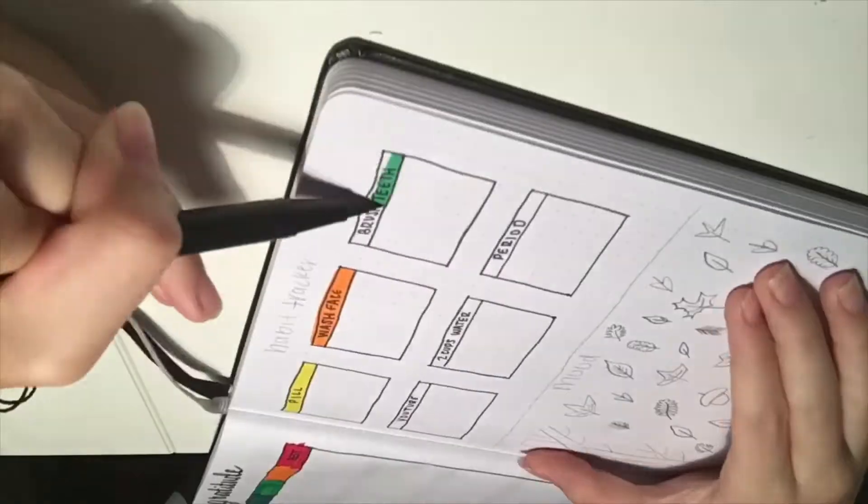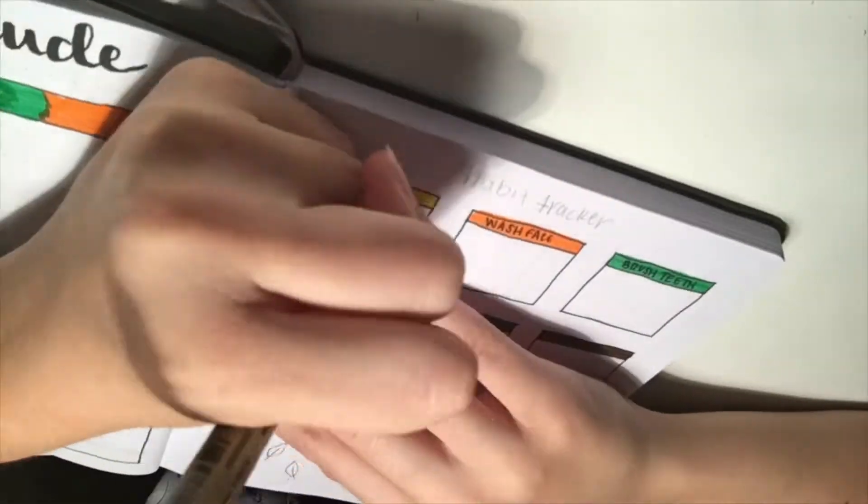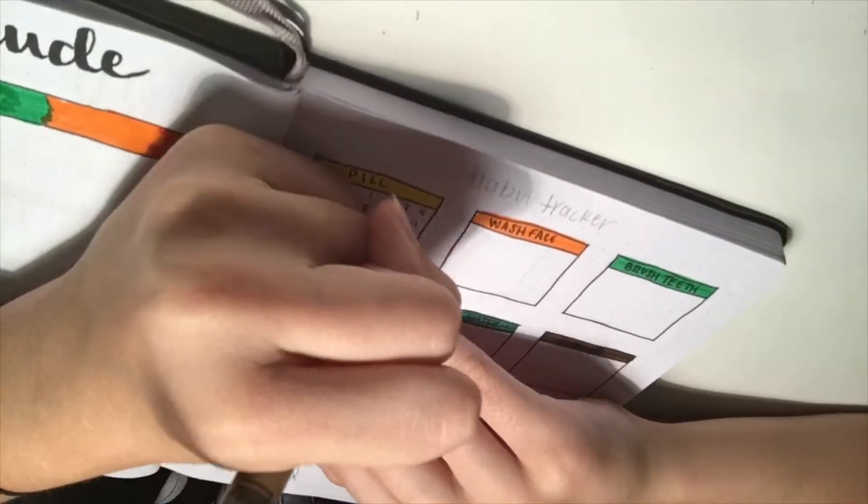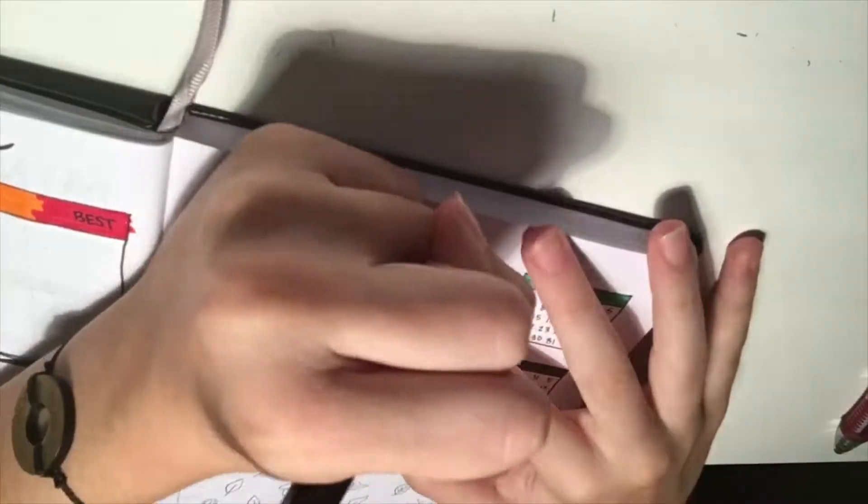On the next page is my habit and mood tracker. I drew six small calendars to color in each day that I do that habit. I track when I take my pill, wash my face, brush my teeth, upload on YouTube, drink enough water, and my period.